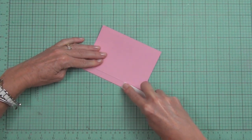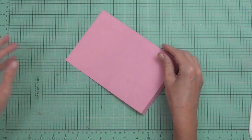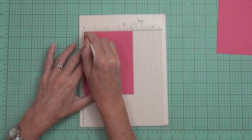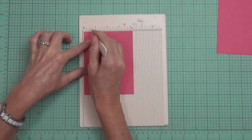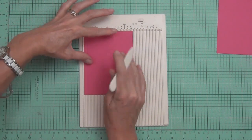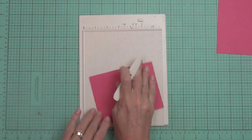So once that's all nice and burnished I can go into two other pieces of cardstock because I want this to be a tunnel card, so I'm going to need two more layers within that tunnel and you'll see what I mean in a moment.